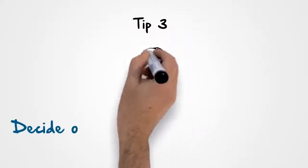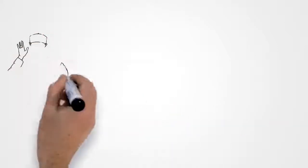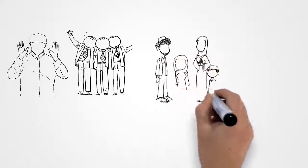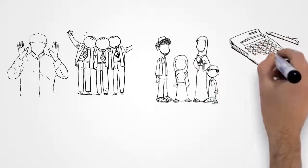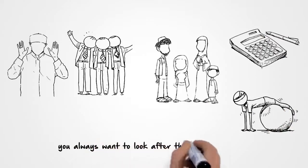Tip 3. Decide on the key areas of your life. These areas can include ibadah, family, friends, finance, health, recreation, and any other slice that you always want to look after throughout your life.